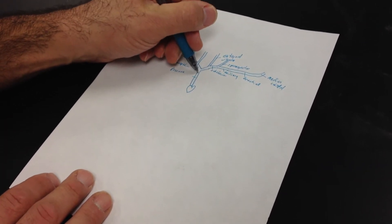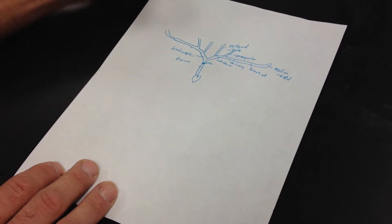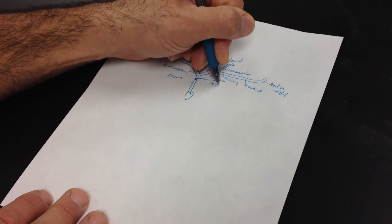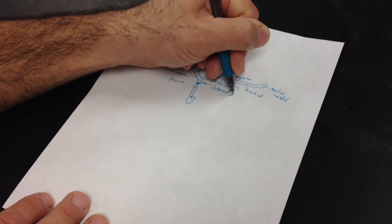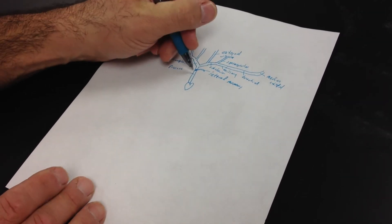Okay, we also have this vein coming off of here, which I'm just going to draw kind of in this direction. This is our internal mammary vein.